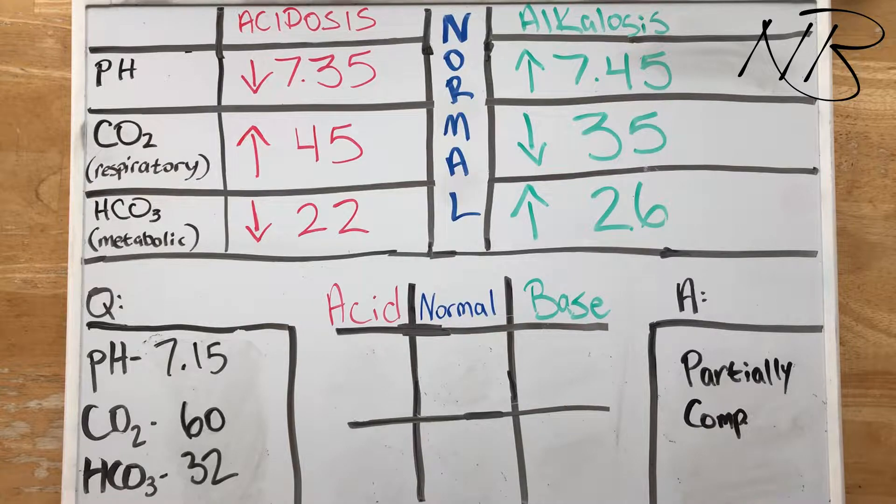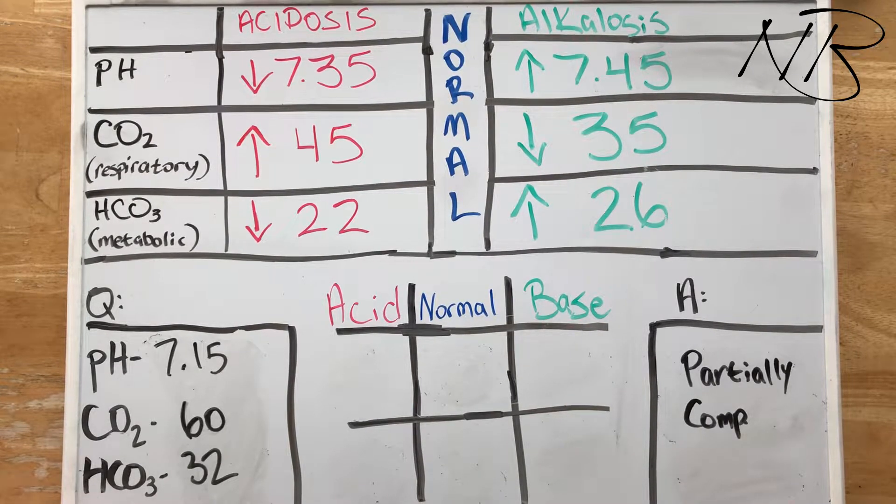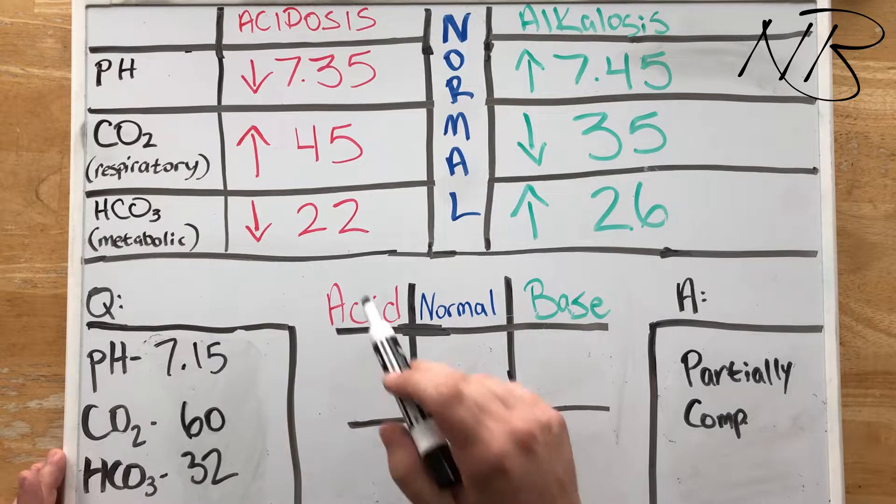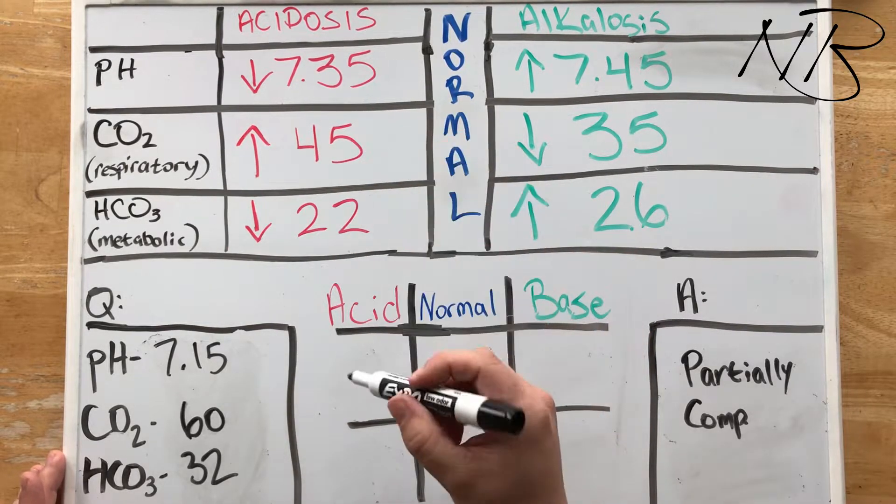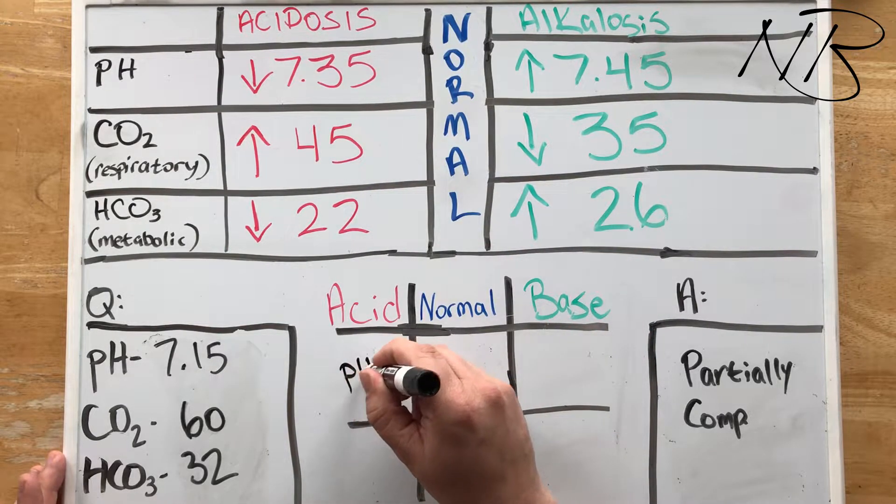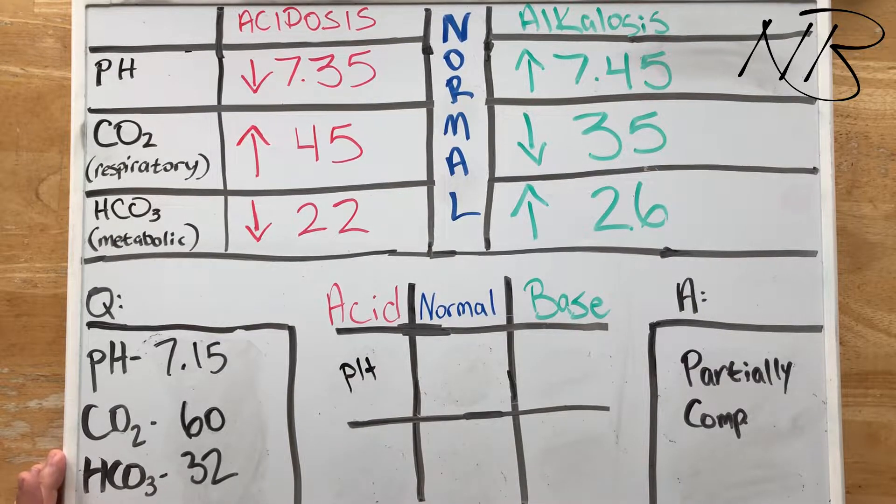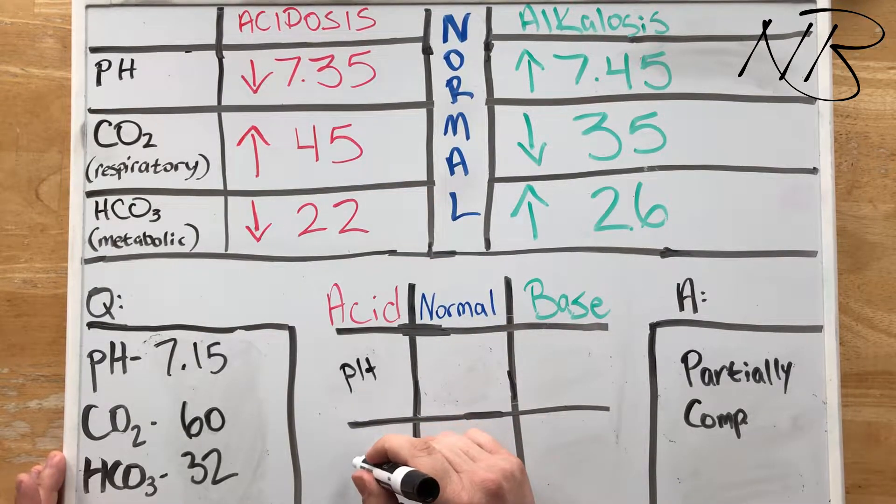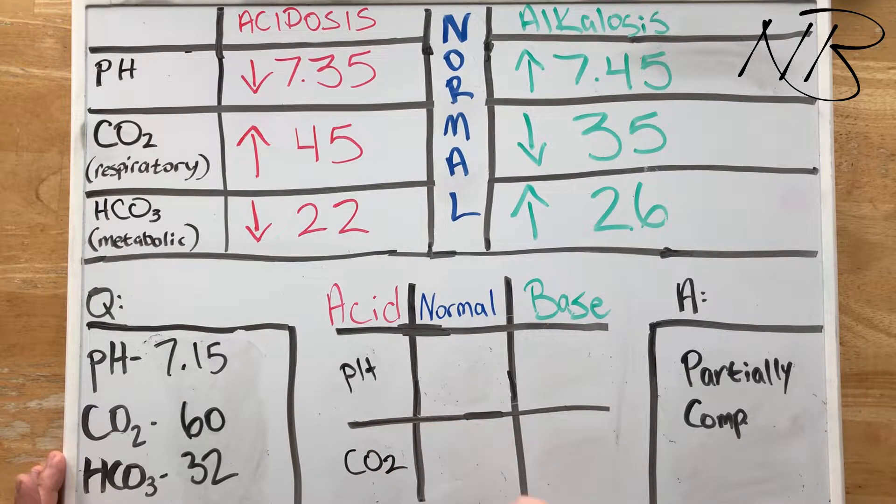All right guys, so this is going to be our very first question on partial compensations. Our pH is 7.15. We already know that's the first thing that we look at. 7.15 is less than 7.35 so it's going to be in our acidotic column. Our CO2 is 60. 60 is well above 45, so that is also going to be in our acidotic column.